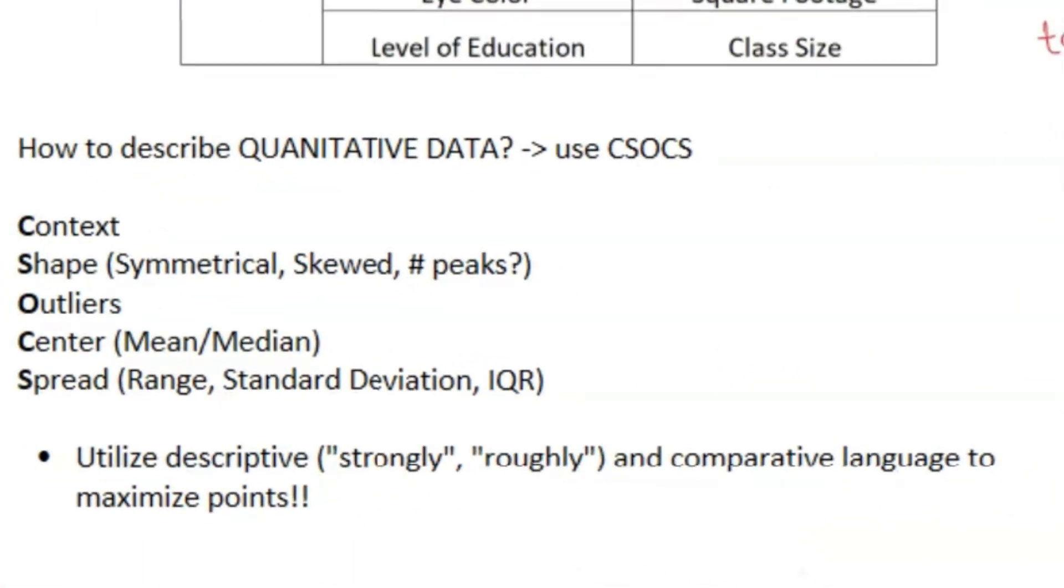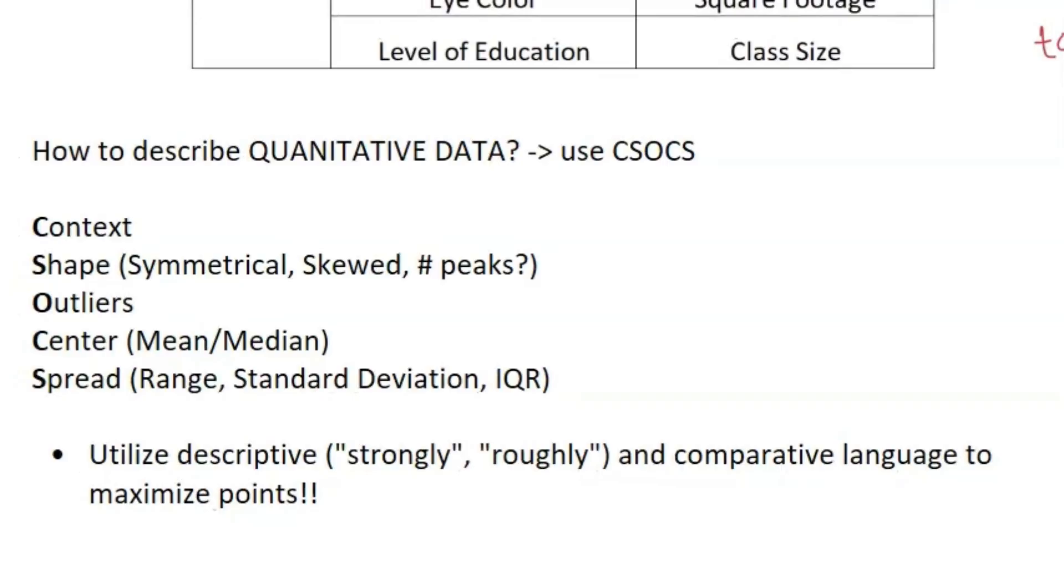Okay, so now let's go on to quantitative data. So for quantitative data, you want to know how to describe it. A big part of AP Stat is just interpreting because a lot of the calculations are pretty straightforward. You have a reference table. You can use your calculator. But you need to know how to interpret. So for quantitative data, use the acronym C-SOX.